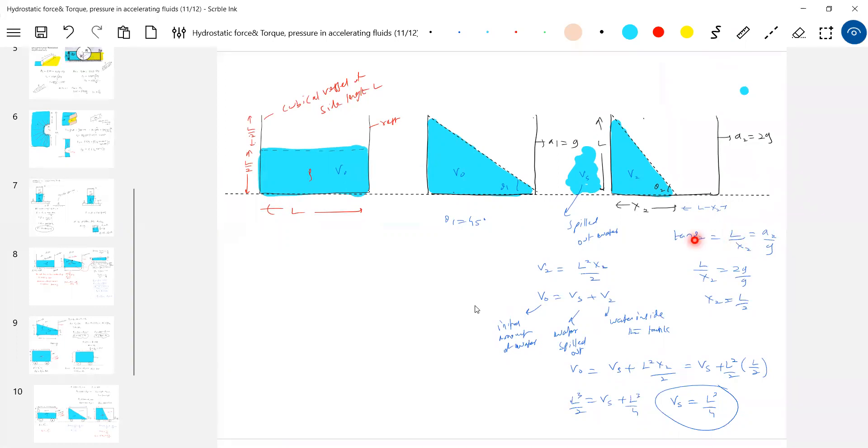Got this? And theta 2 will come to know. So x2 and l, if you know it, you'll get theta. From theta, you get acceleration. Either way - if they give spilled out volume, you can calculate theta 2. From theta 2 you'll get the acceleration. If they give acceleration, from acceleration you get theta 2, from theta 2 you're going to get x2, and from x2 you're going to get the spilled out volume.